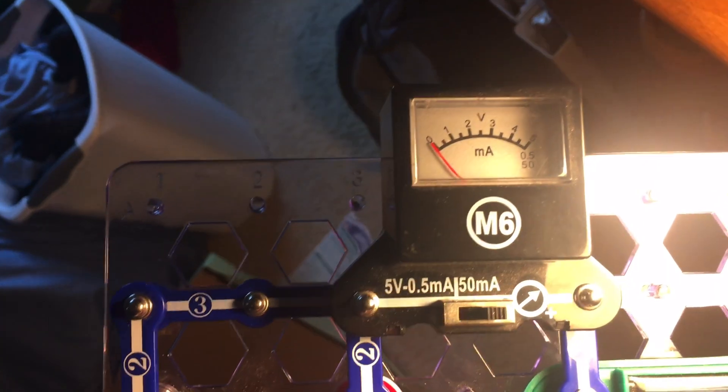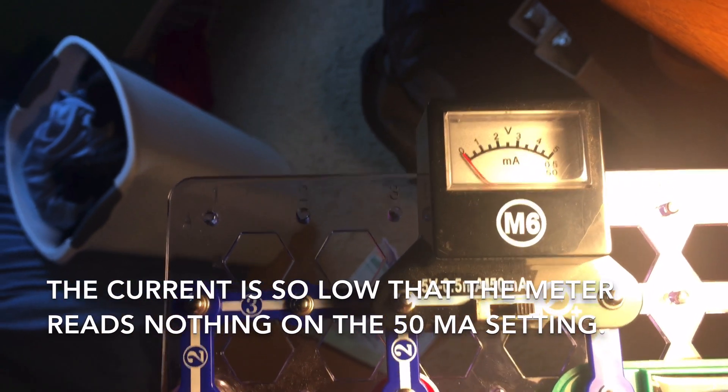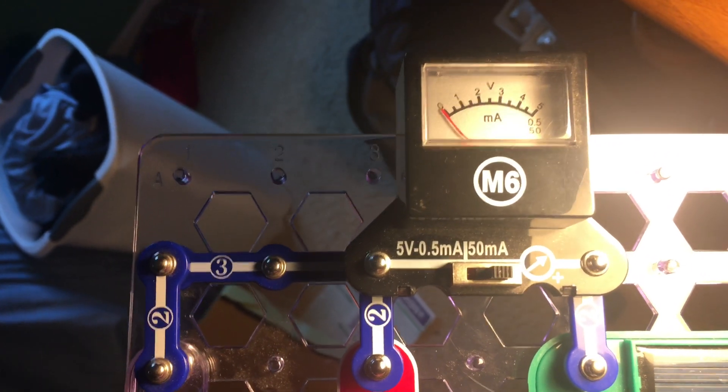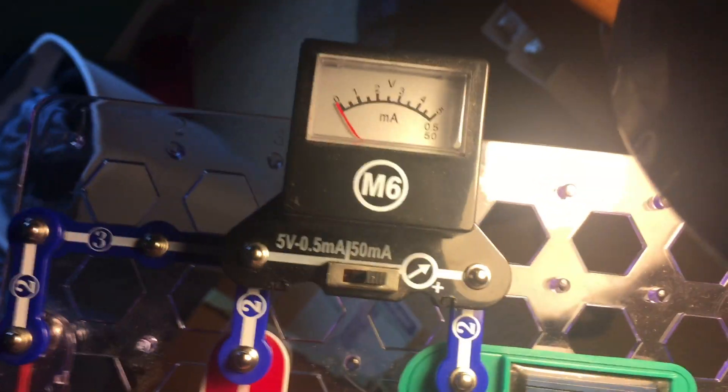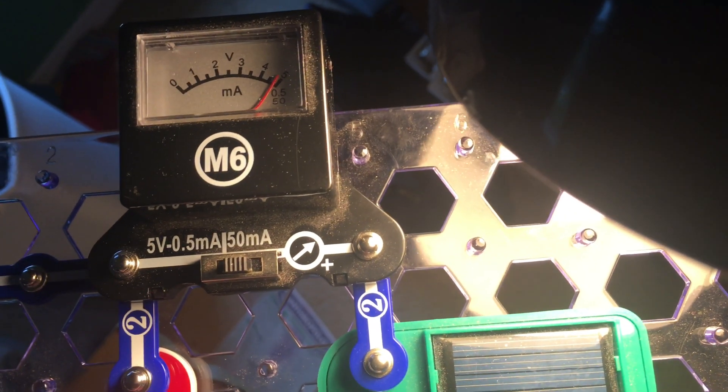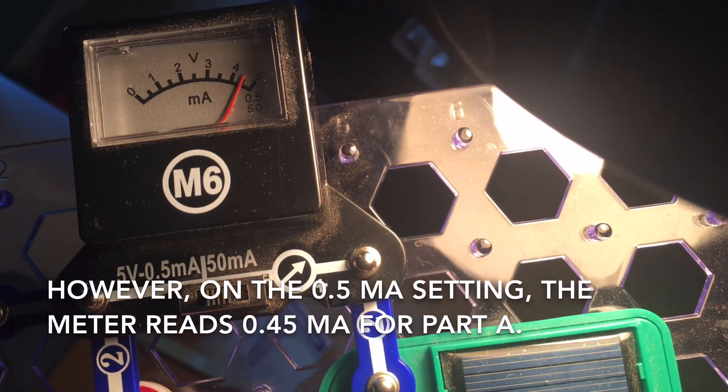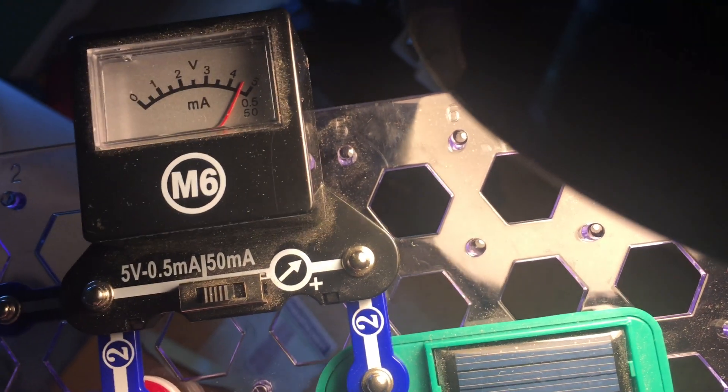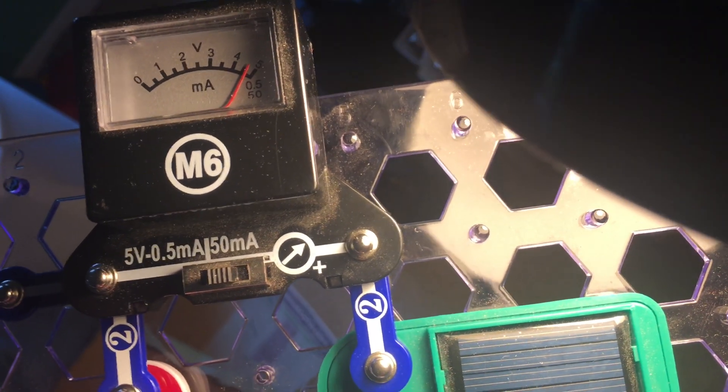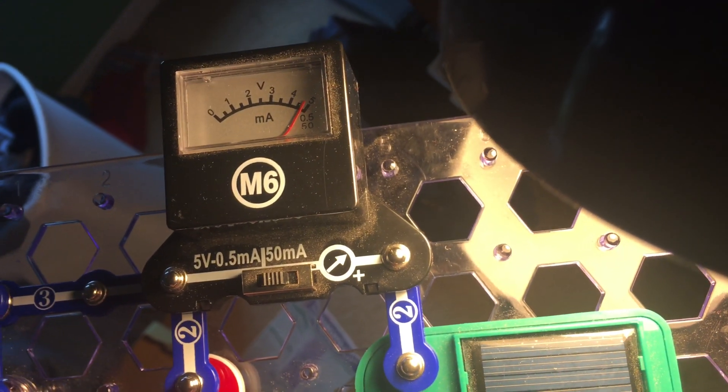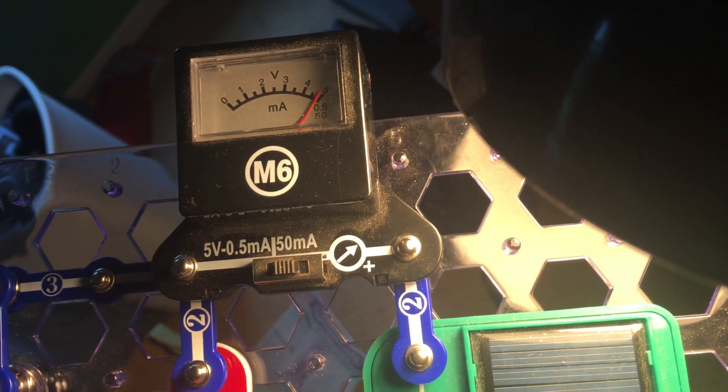But you can see on the voltage meter, it reads nothing on the 50 milliamp setting. Whatever little current there is flowing through the meter, it is not readable. However, on the 0.5 milliamp setting, it looks like 0.45 milliamps of current is flowing through the meter now, flowing through the circuit.